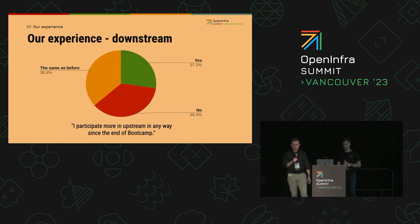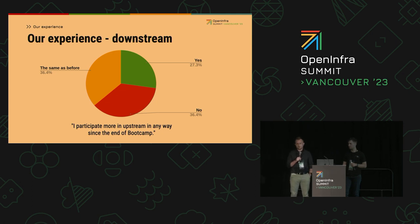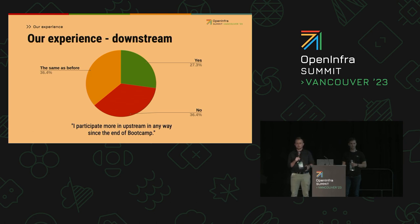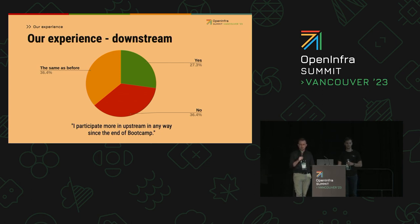Therefore we did another experiment. We built on this pool of tasks and we created a program called boot camp. Everyone who is interested in upstream contributions can participate. We hosted a few sessions where we explained the theory about how upstream works, how to contribute there, and so on. And then we asked every participant to pick a task from the pool and finish it. One important thing to mention is that the participants were originally from two groups. One group was people who contribute upstream more or less regularly but wanted to try a contribution to a different project. The other group was people who don't contribute regularly to upstream but wanted to try that.